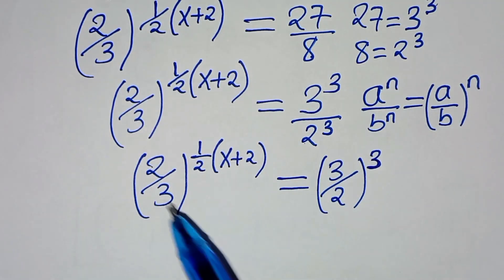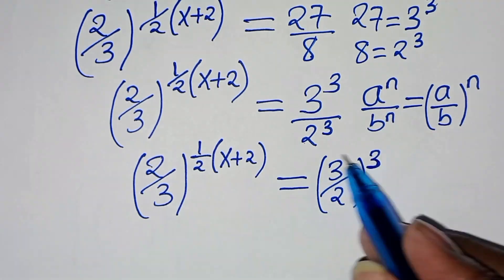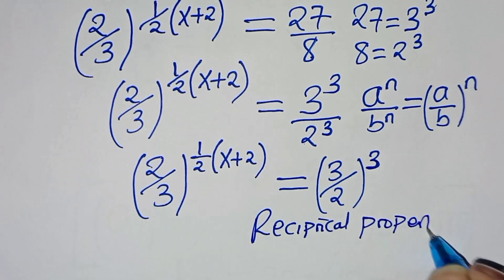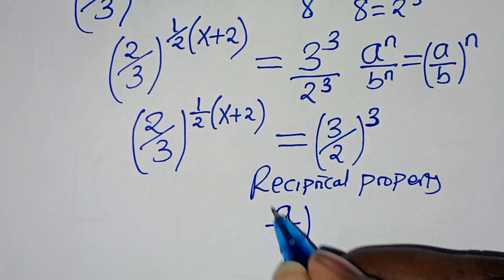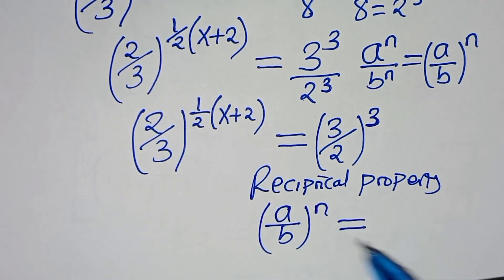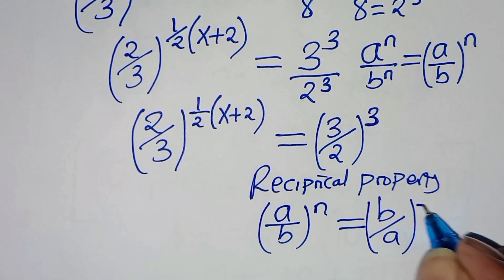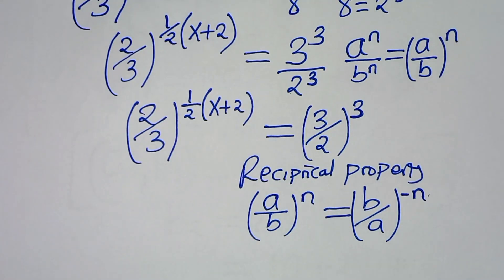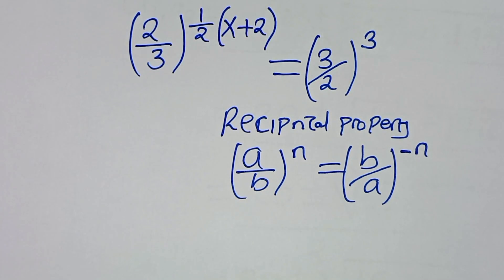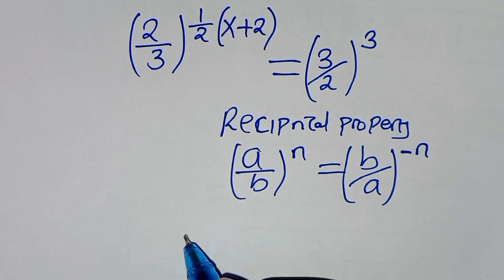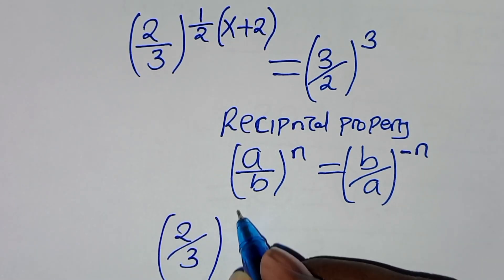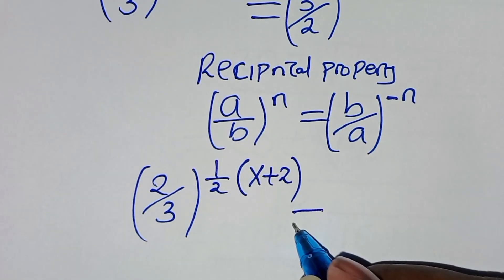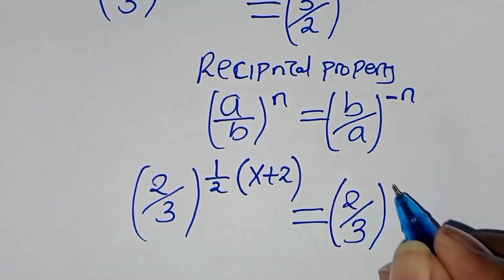The next step: we have a base of 2 over 3 on the left and a base of 3 over 2 on the right, so we will apply the reciprocal property. If we have a over b raised to the power of n, we can express this as b over a raised to the power of minus n, introducing a negative sign. Applying this reciprocal property, we get 2 over 3 raised to the power of one half times (x plus 2), equal to 2 over 3 raised to the power of minus 3.